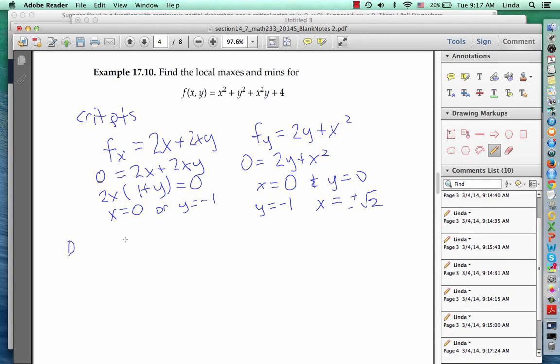Let's look at the discriminant. f sub xx is 2 plus 2y, f sub yy is 2, and f sub xy is 2x. So therefore, the discriminant is 2 plus 2y times 2 minus 2x squared, which is 4 plus 4y minus 4x squared.